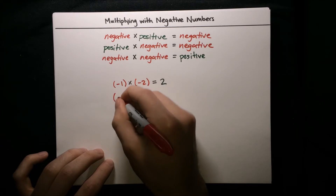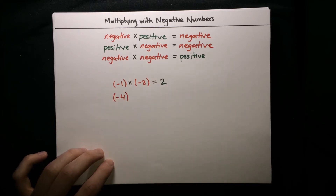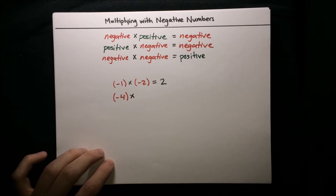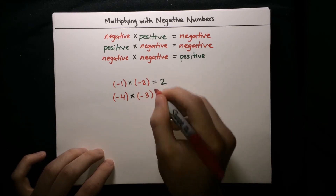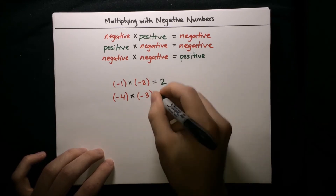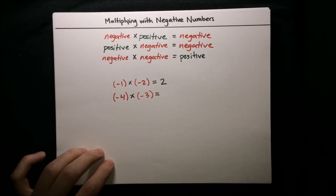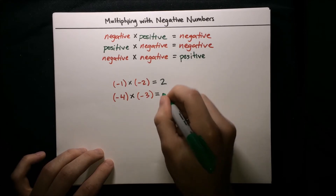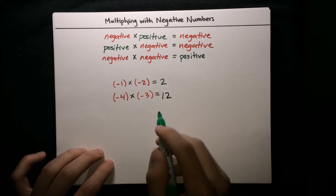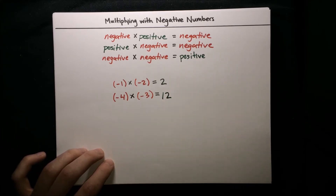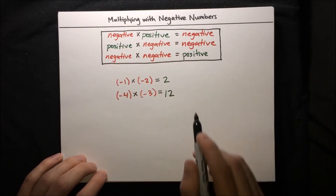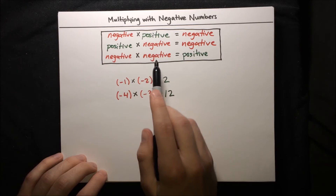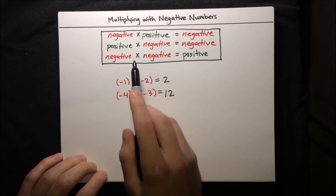Likewise, if we take negative 4 and multiply it by negative 3, the result is a positive number — positive 4 times 3, which is 12. So negative 4 times negative 3 equals positive 12. Let's box these important rules, which we'll refer to any time we do multiplications with negative numbers.